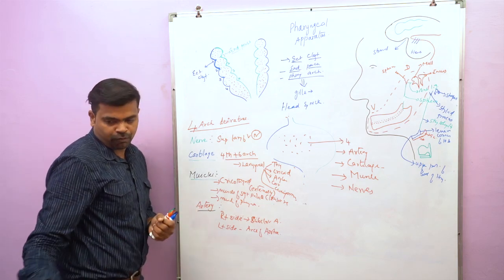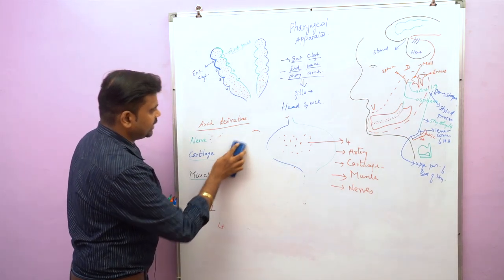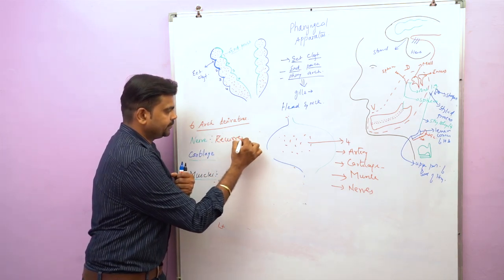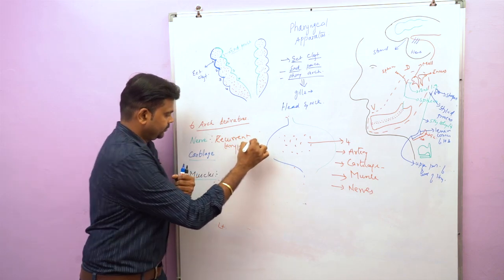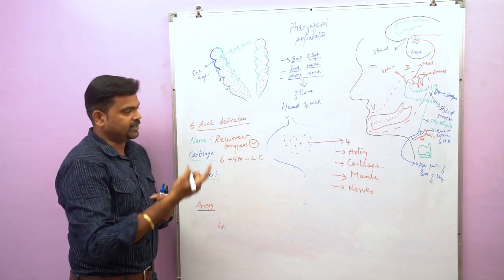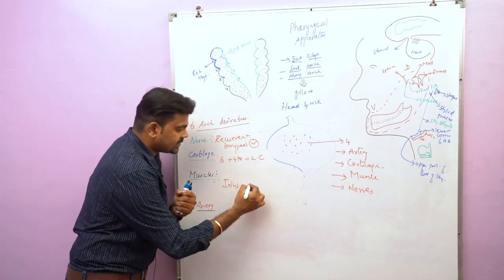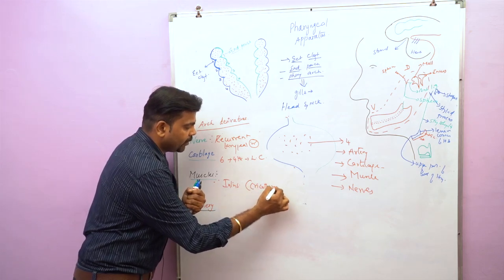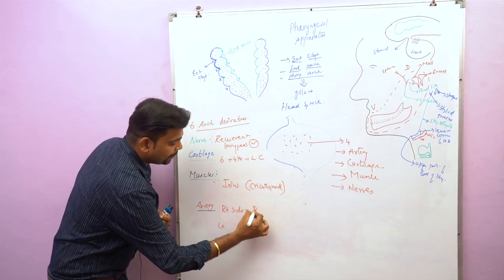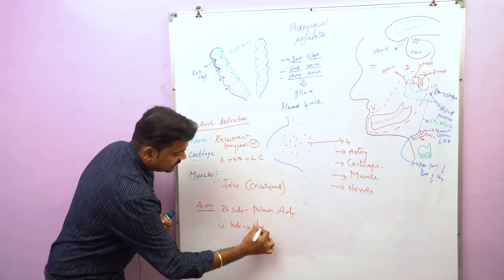The fifth arch disappears, so we move to the sixth pharyngeal arch. The nerve of the sixth arch is the recurrent laryngeal nerve. The sixth arch cartilage fuses with the fourth arch cartilage to form the laryngeal cartilage. All the intrinsic muscles of the larynx are derived from the sixth arch, except the cricothyroid muscle which arises from the fourth arch. On the right side the artery gives rise to the pulmonary artery, and on the left side it gives rise to the ductus arteriosus.